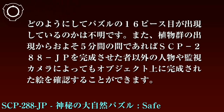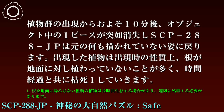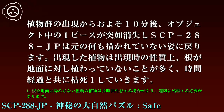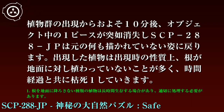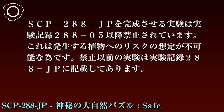完成の際に最後の16ピース目が出現します。16ピース目の出現位置はオブジェクトの一番右下に限らず、中央部や各辺に現れる場合もあります。どのようにしてパズルの16ピース目が出現しているのかは不明です。また植物群の出現からおよそ5分間の間であれば、SCP-288-JTを完成させたもの以外の人物や監視カメラによってもオブジェクト上に完成された絵を確認することができます。植物群の出現からおよそ10分後、オブジェクト中の1ピースが突如消失し、SCP-288-JTは元の何も描かれていない姿に戻ります。